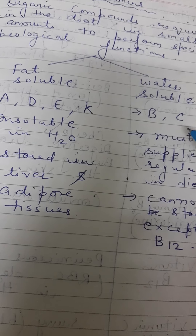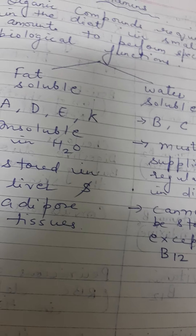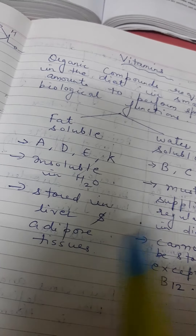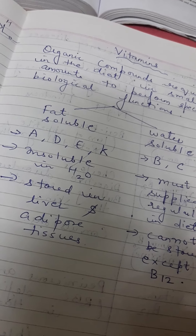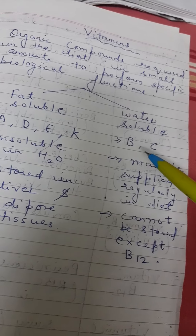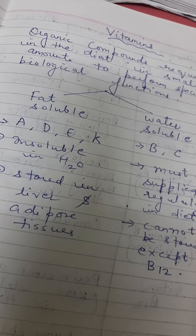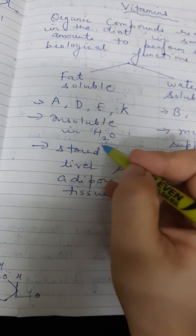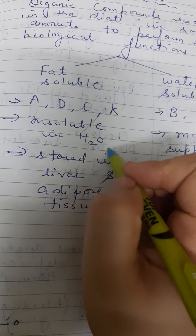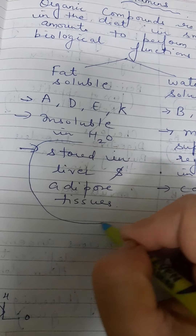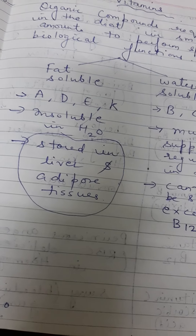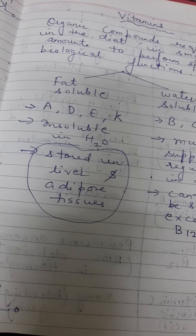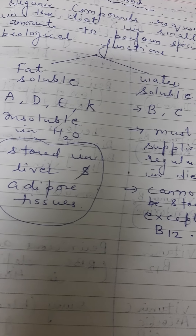For example, vitamin C is present in lemon and orange. Now in exams, the key question is: what is the difference between fat-soluble vitamins and water-soluble vitamins? Water-soluble means those that are soluble in water, whereas fat-soluble vitamins are insoluble in water. Fat-soluble vitamins are stored in liver and adipose tissues.